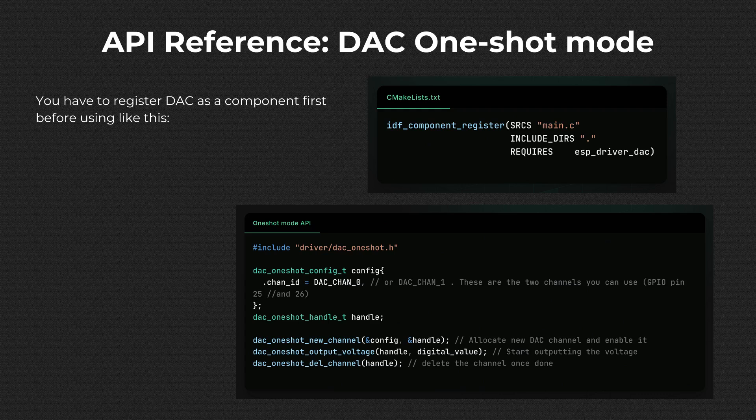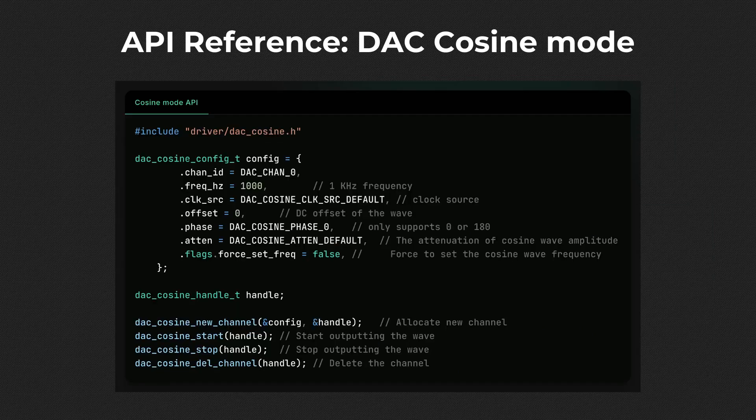The API of DAC follows the same pattern as ADC but is a bit more simple. You have a handle and create a new channel for it with a specified config. You can start operating on the channel afterwards, and don't forget to delete the channel after using it. This is straightforward for the one-shot mode. For cosine mode, you have to specify more parameters in the configuration such as frequency — a minimum of 130 Hz and should not exceed 200 kHz — clock source, attenuation of the wave amplitude, and phase.